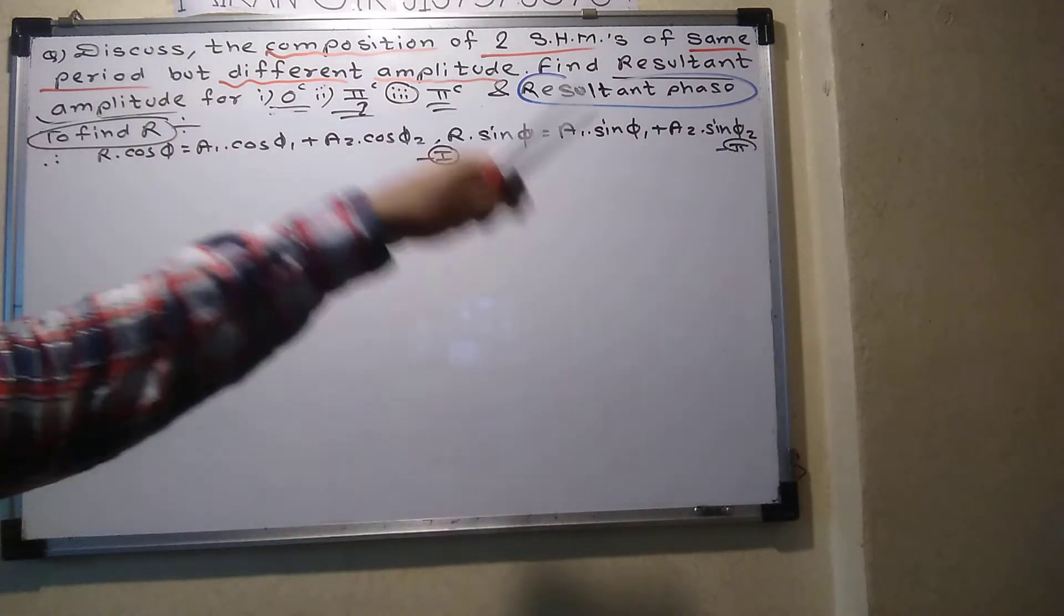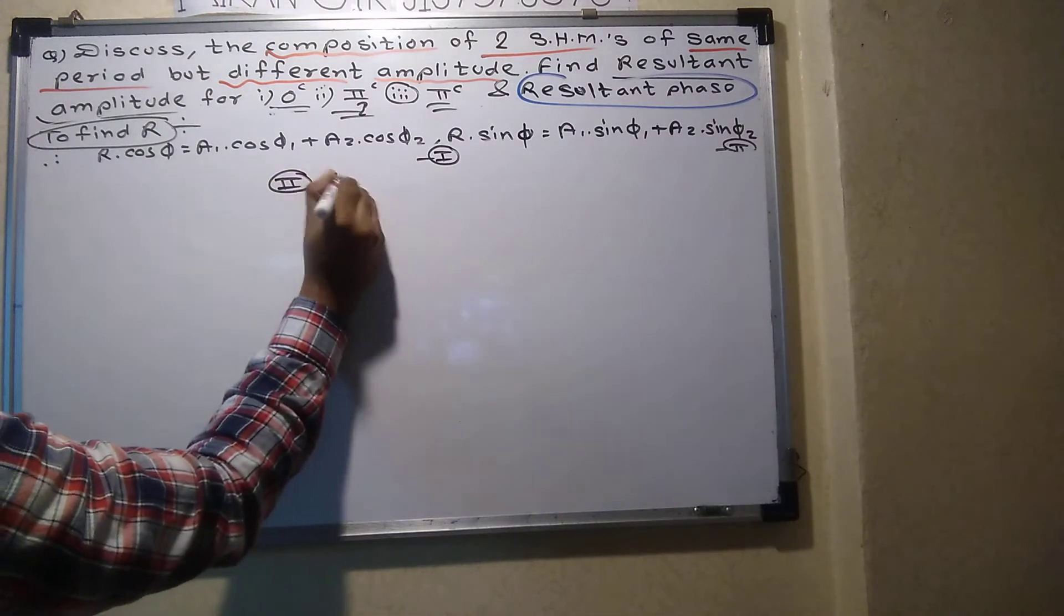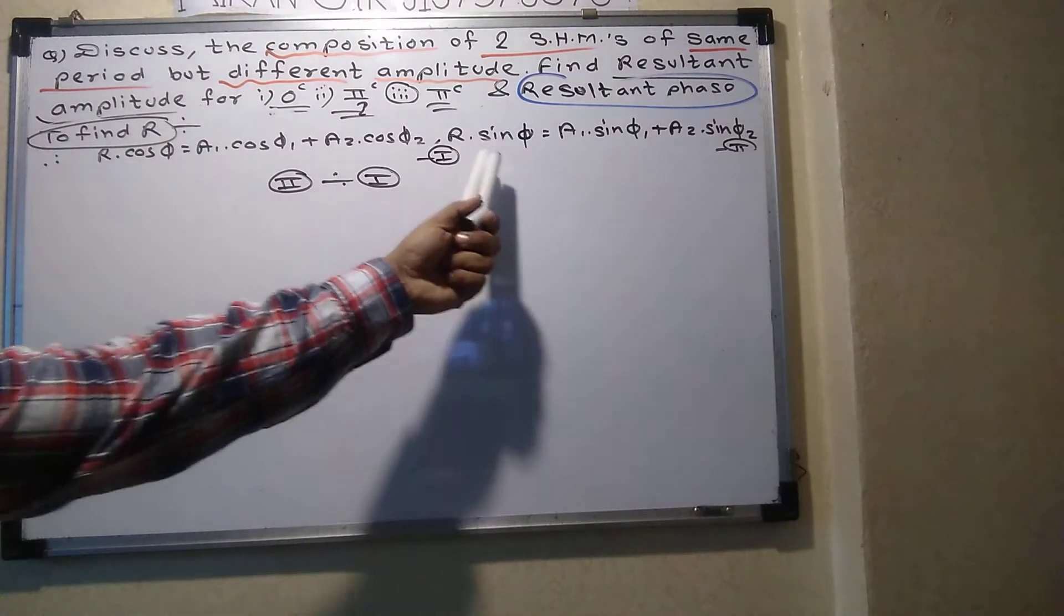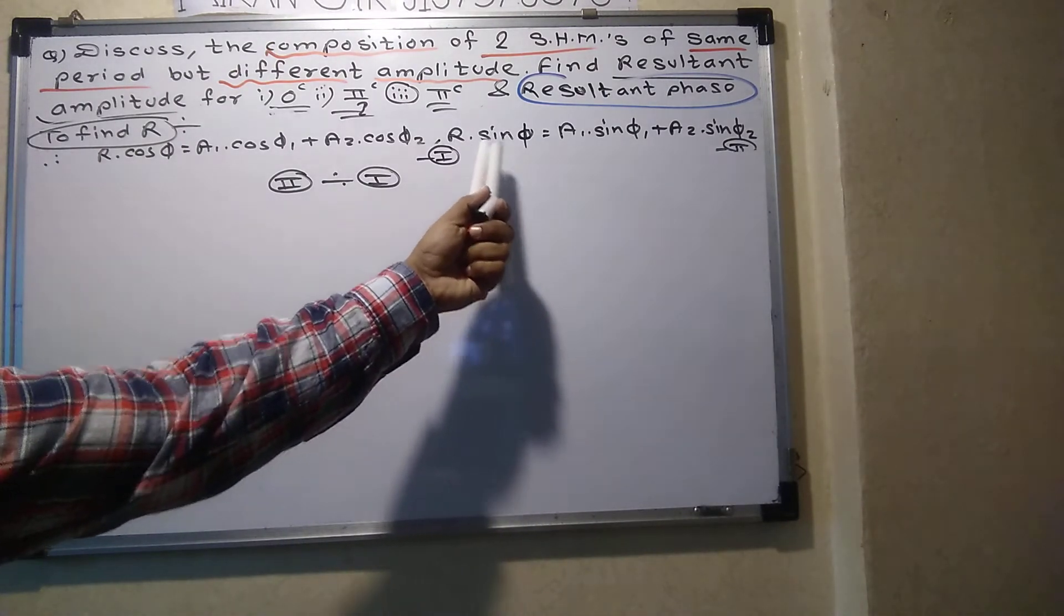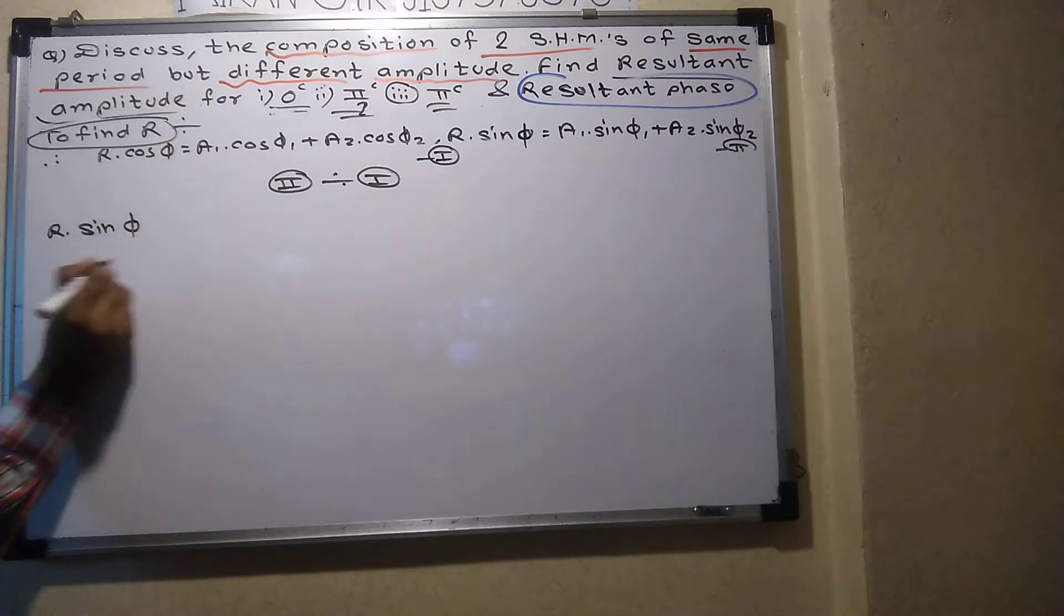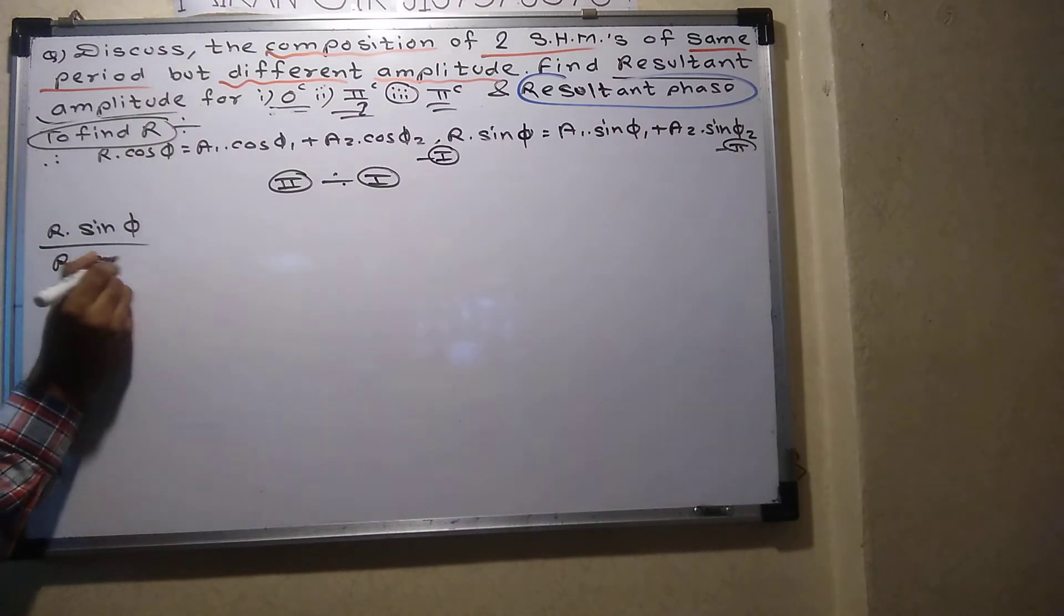We are going to divide one by two, means two divided by one. So what is the second equation left hand side? What is the left hand side of the second equation? R sin phi. What is the left hand side of the first equation? R cos phi.